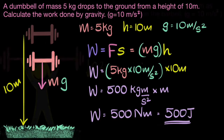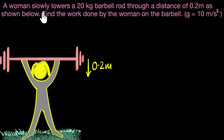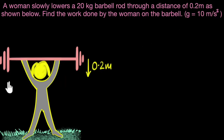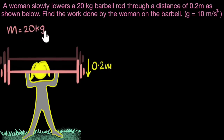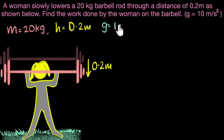Let's go ahead and solve another one. A woman slowly lowers a 20 kilogram barbell rod through a distance of 0.2 meters. Find the work done by the woman on the barbell. She's exercising and lowering the barbell rod. Given: mass is 20 kilogram, height is 0.2 meters, and g is 10 meters per second squared.